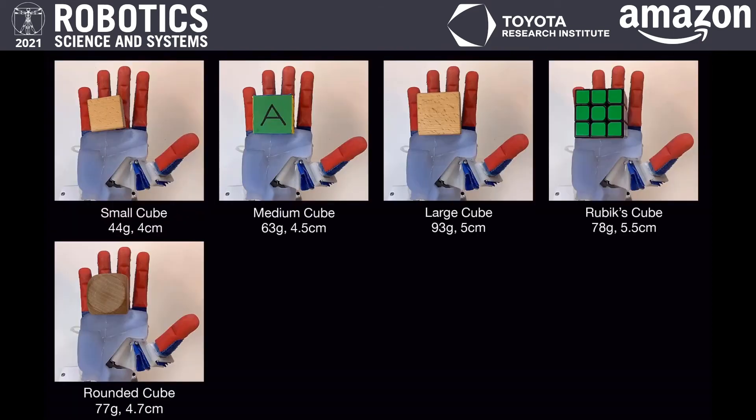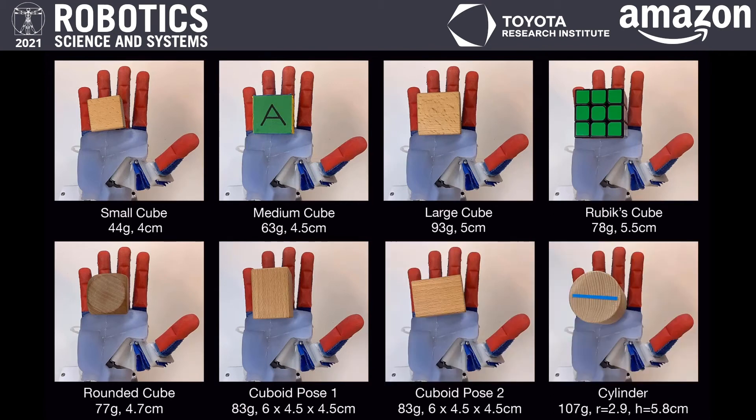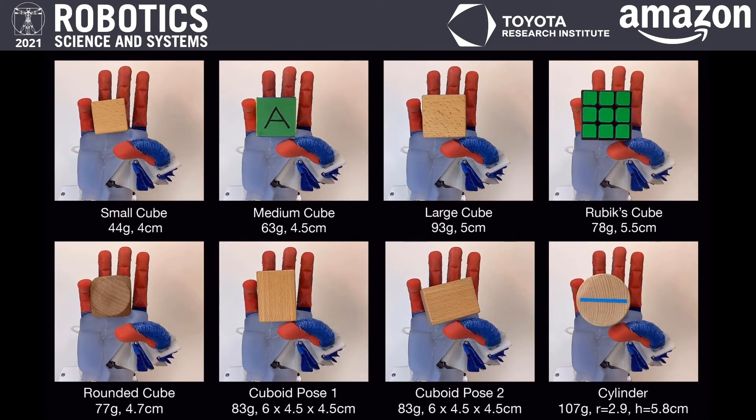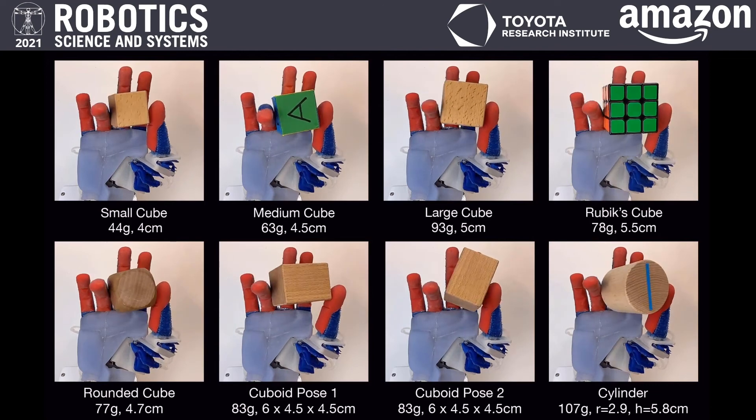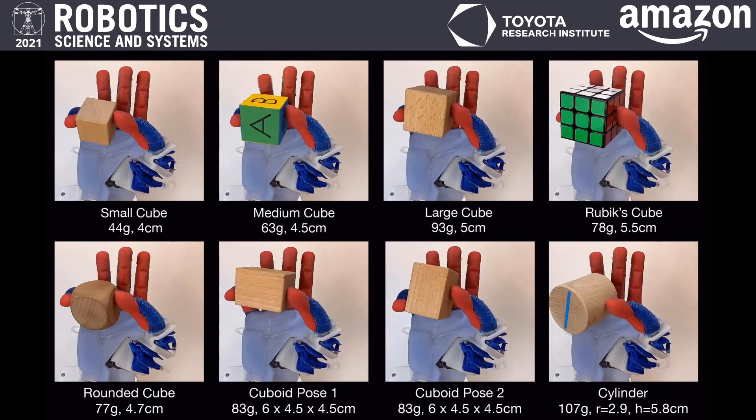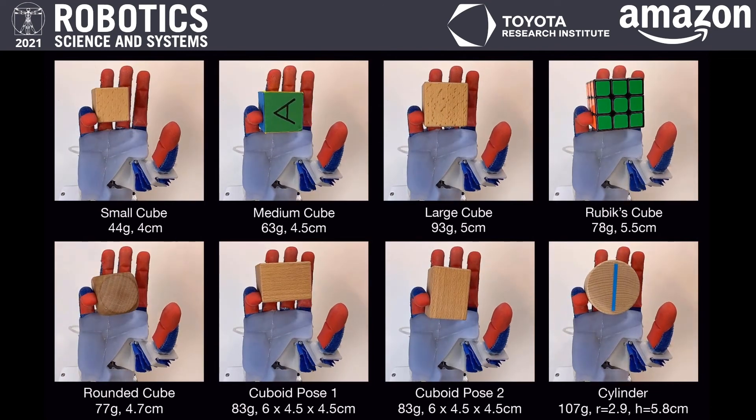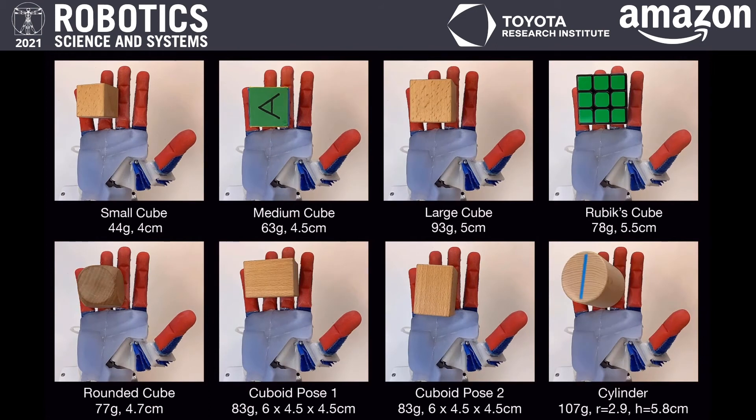For example, this multi-step skill generalizes to objects of different shapes, sizes, and weights, including a cylinder. Again, what you saw here is completely sensorless. All these objects are manipulated with the exact same actuation sequence.